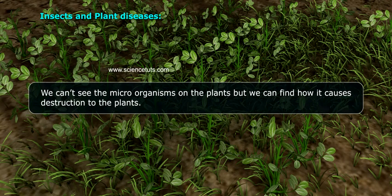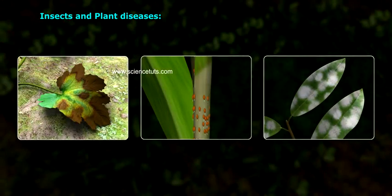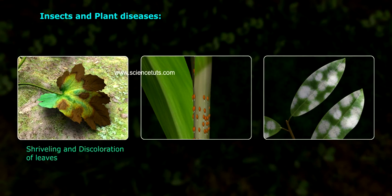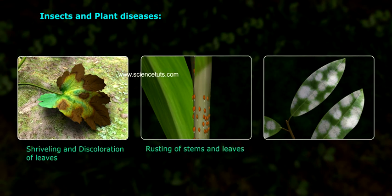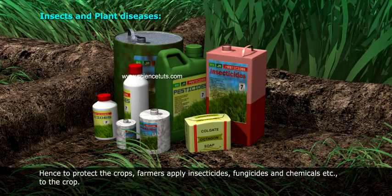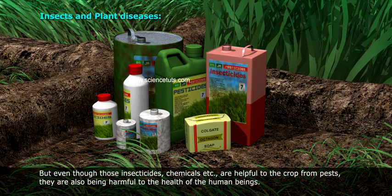We can't see the microorganisms on the plants, but we can find how they cause destruction. Microorganisms cause shriveling and discoloration of leaves, rusting of stems and leaves, and fungal growths, etc. Hence, to protect the crops, farmers supply insecticides, pesticides, fungicides, and chemicals to the crop.